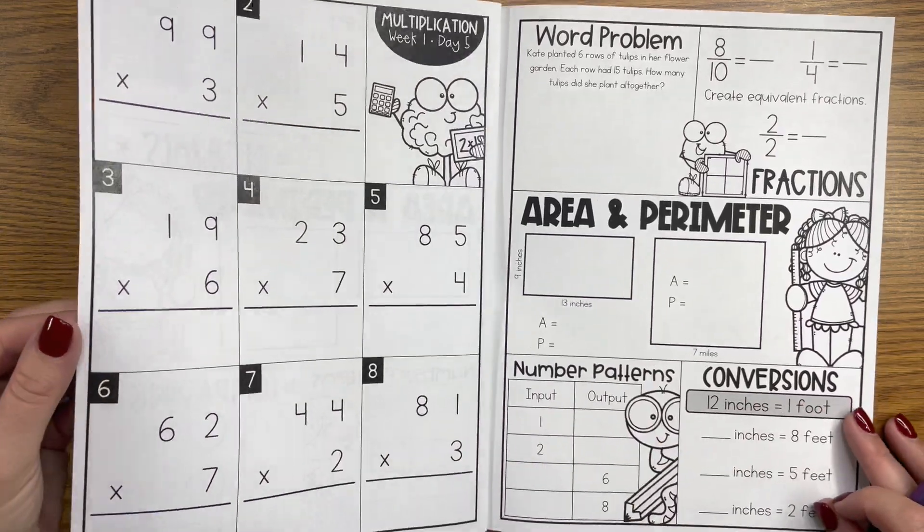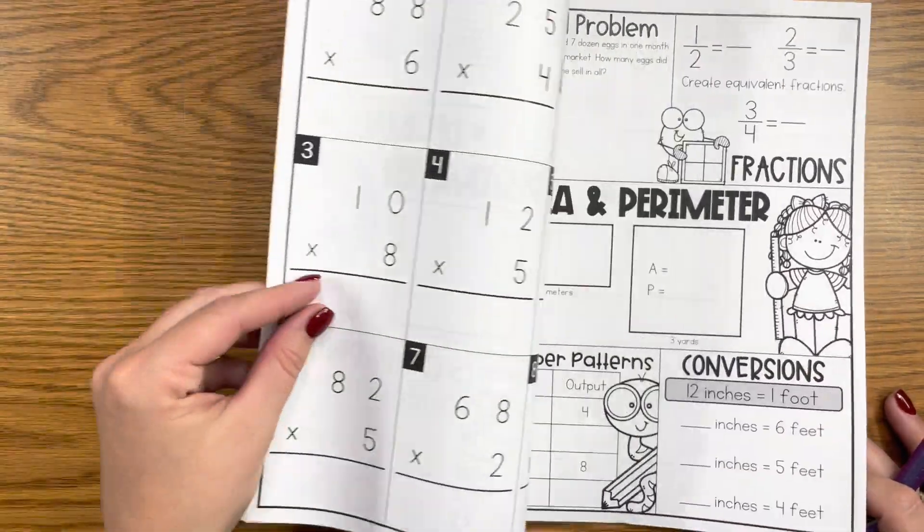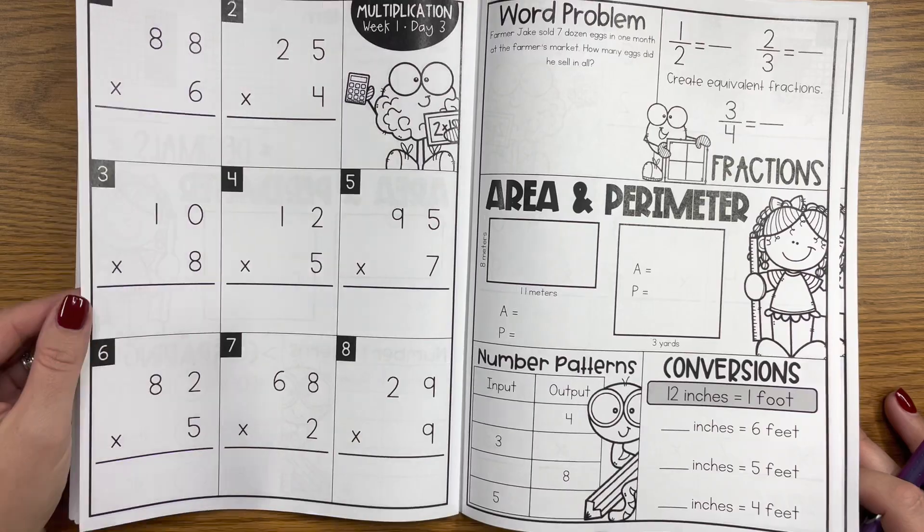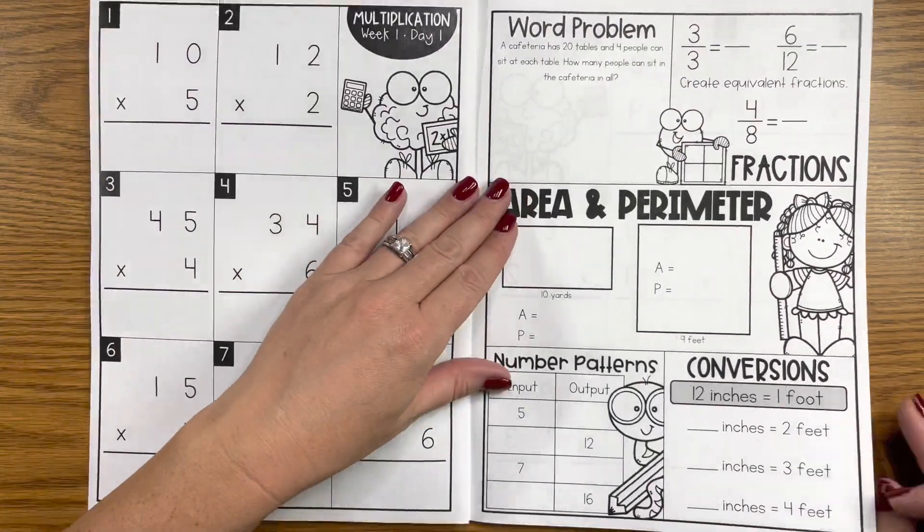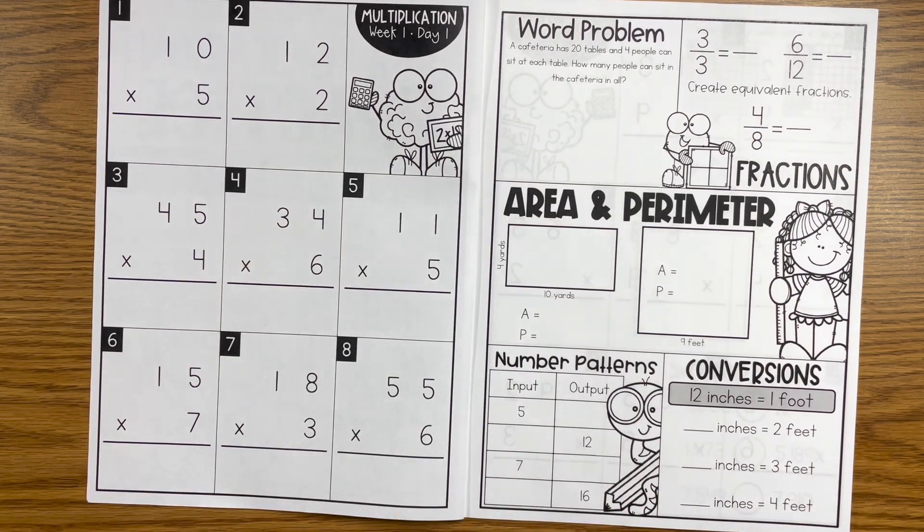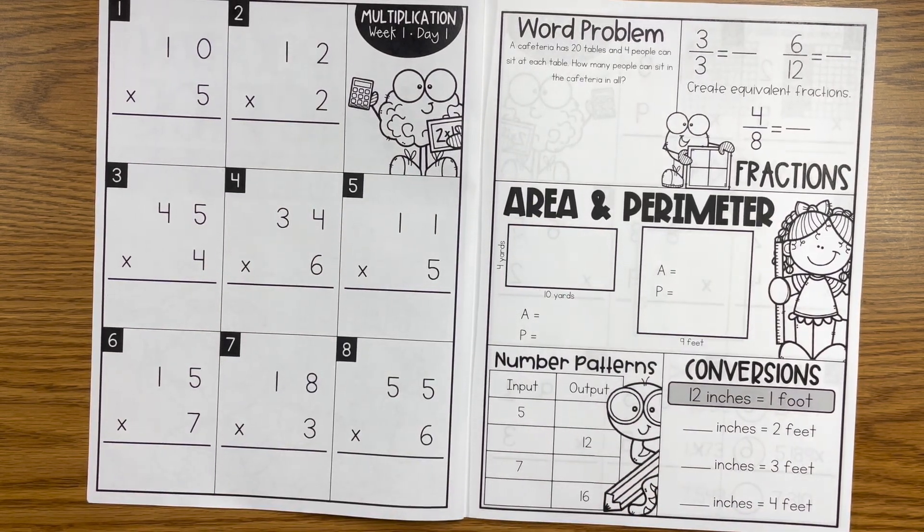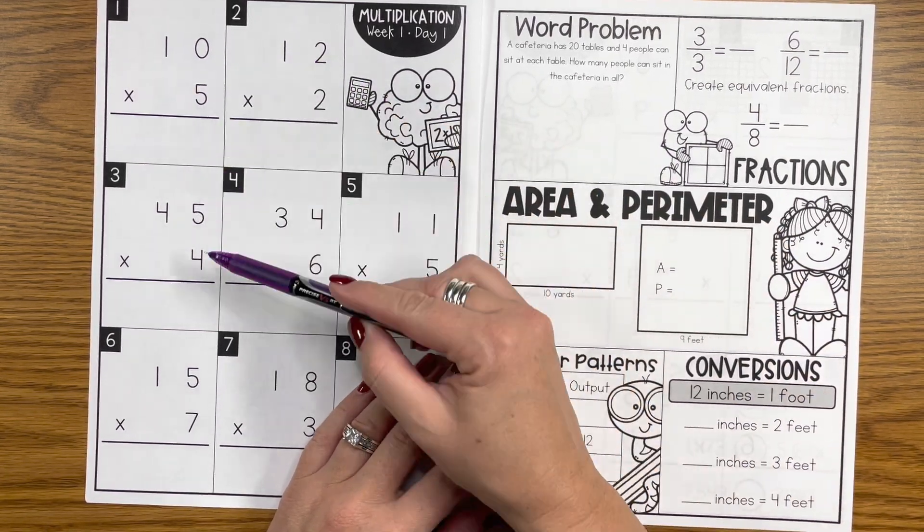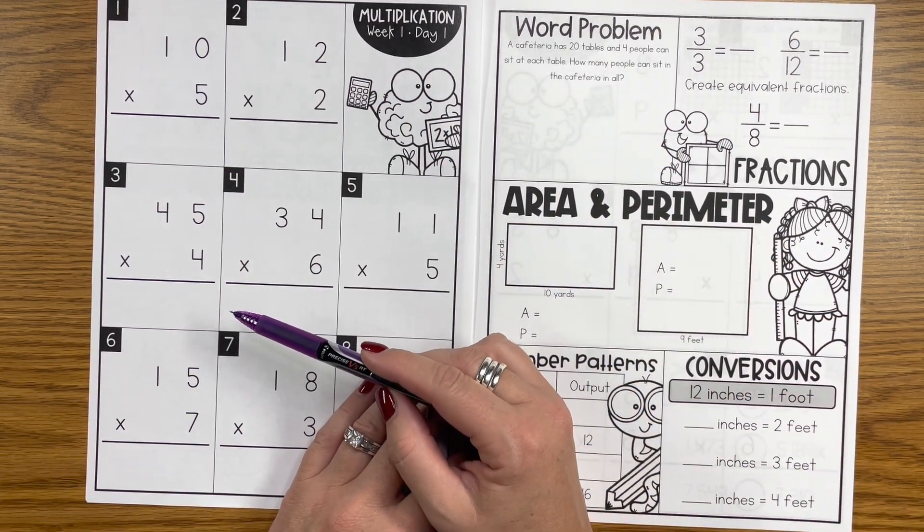On the right hand side it's going to be very similar every day, but there are a couple of things that are going to change. So every day you'll have a word problem in this spot where you might be working on addition, subtraction, multiplication, or division of various word problems. Again kind of in their scope of what they're working on.